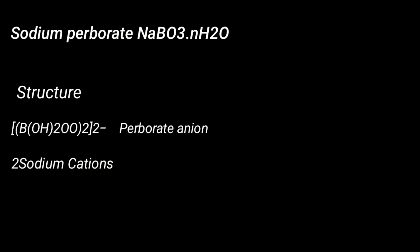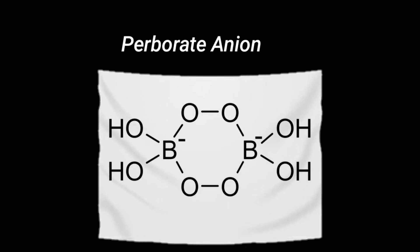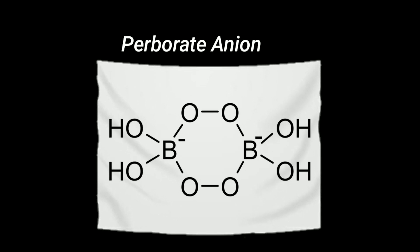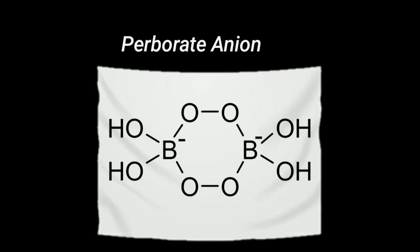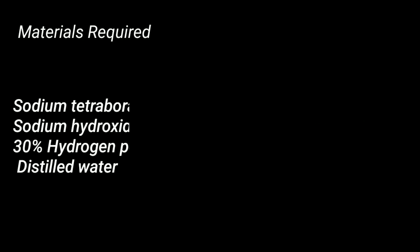Sodium perborate has the general formula NaBo3·nH2O. It has two sodium ions and a perborate anion, with two negative charges on the boron atom which are neutralized by the sodium ions. It has its use as one of the peroxide-based bleaches in laundry detergents.